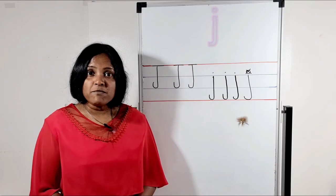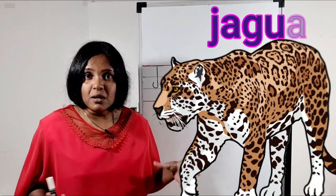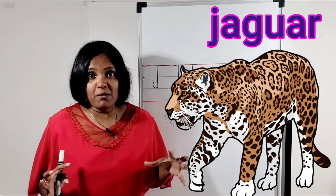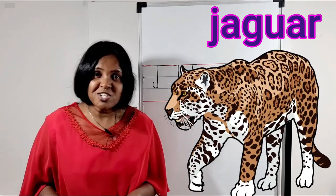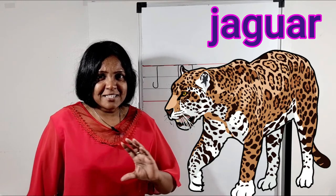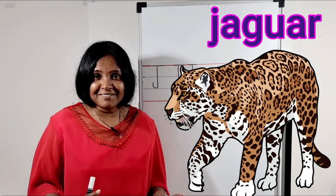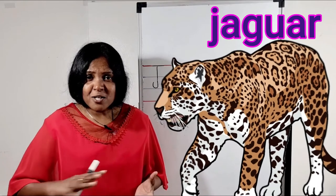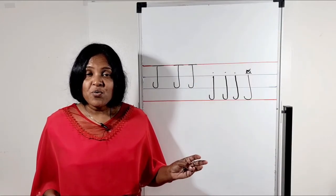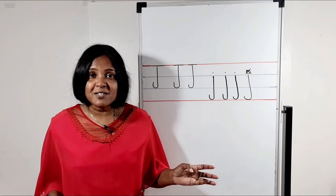Number 5. Jaguar. Jaguar is a scary animal. Just like tiger. But different from tiger. It has spots all over the body. Now you all know 5 words start with letter J.